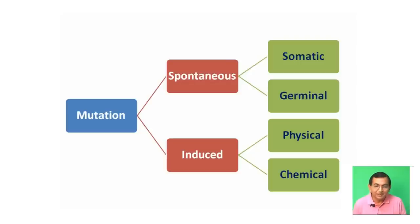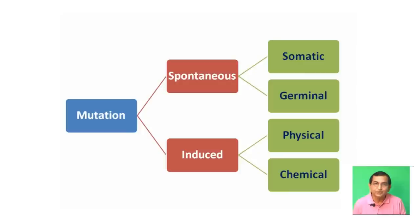Chemical agents which can also cause mutation include ethane methane sulfonate, hydrogen peroxide, and there are plenty of chemical mutagens that cause mutation.